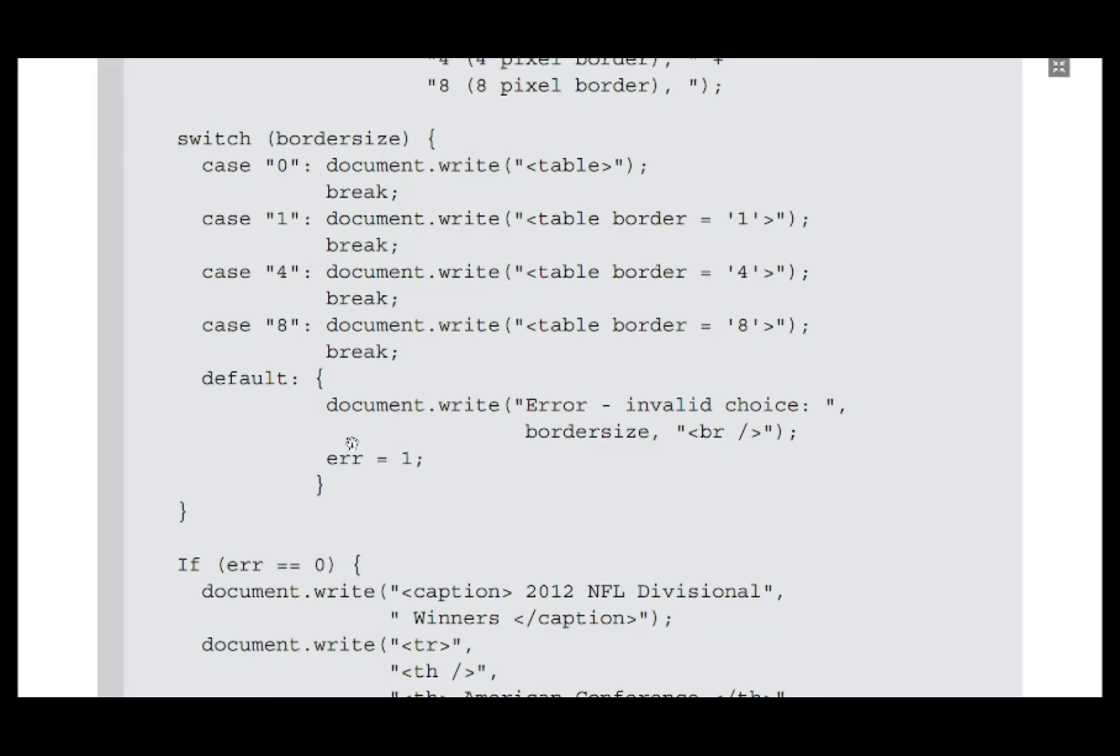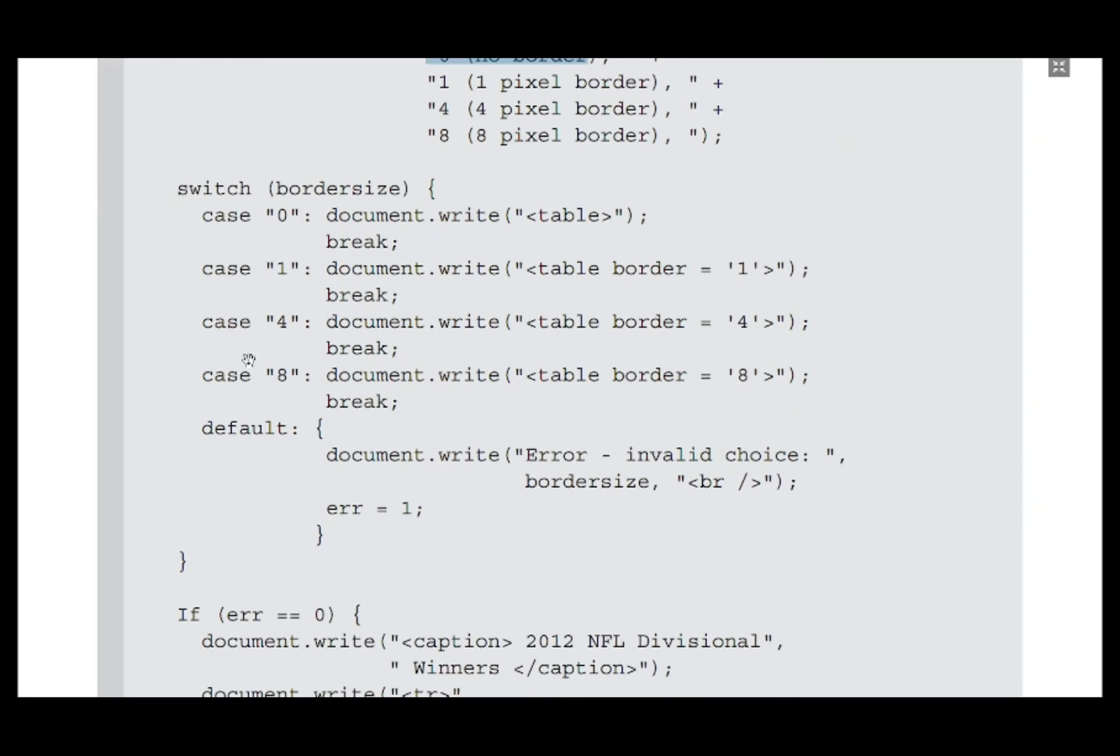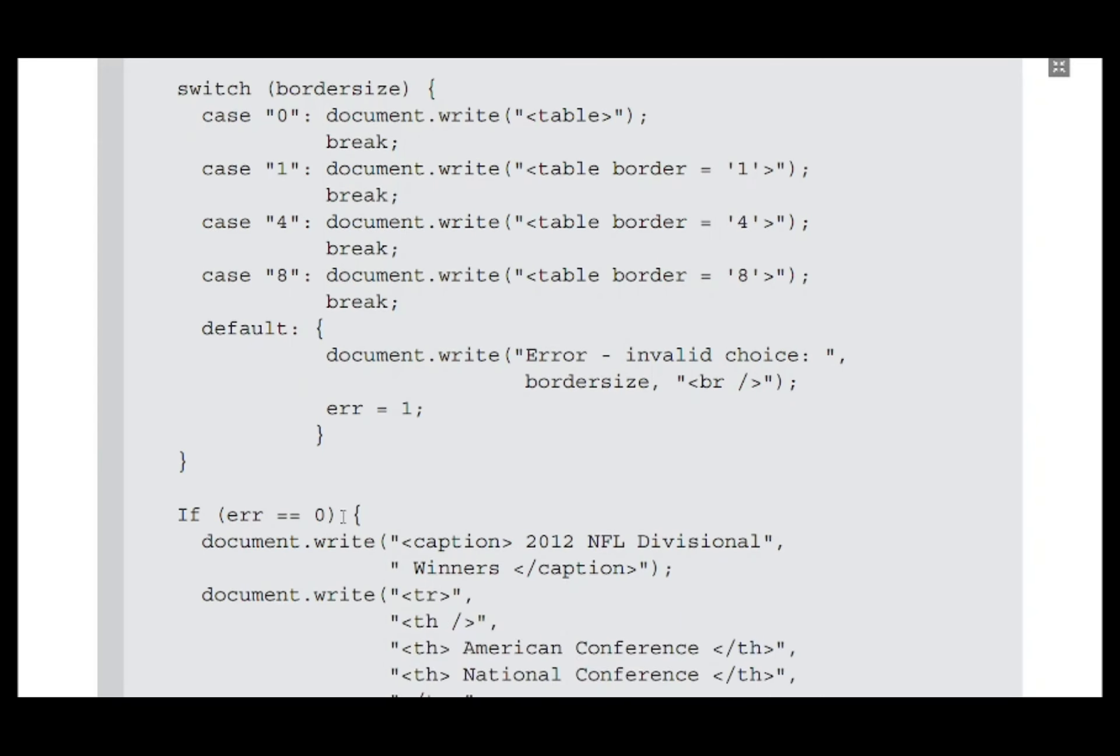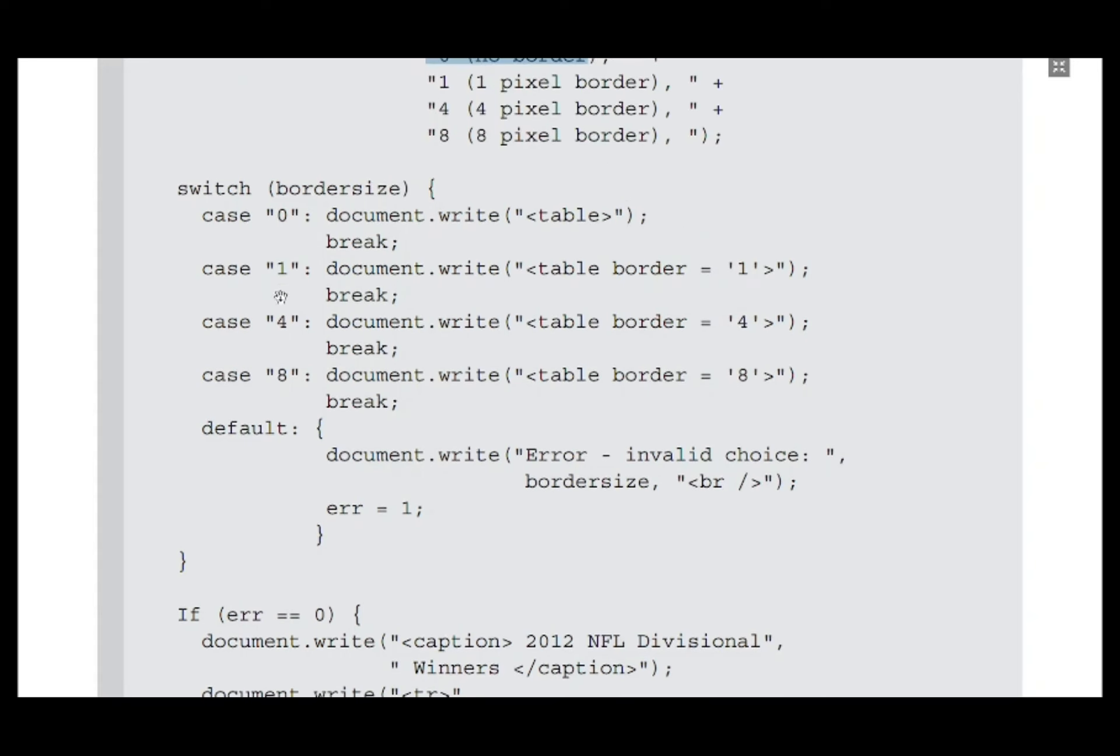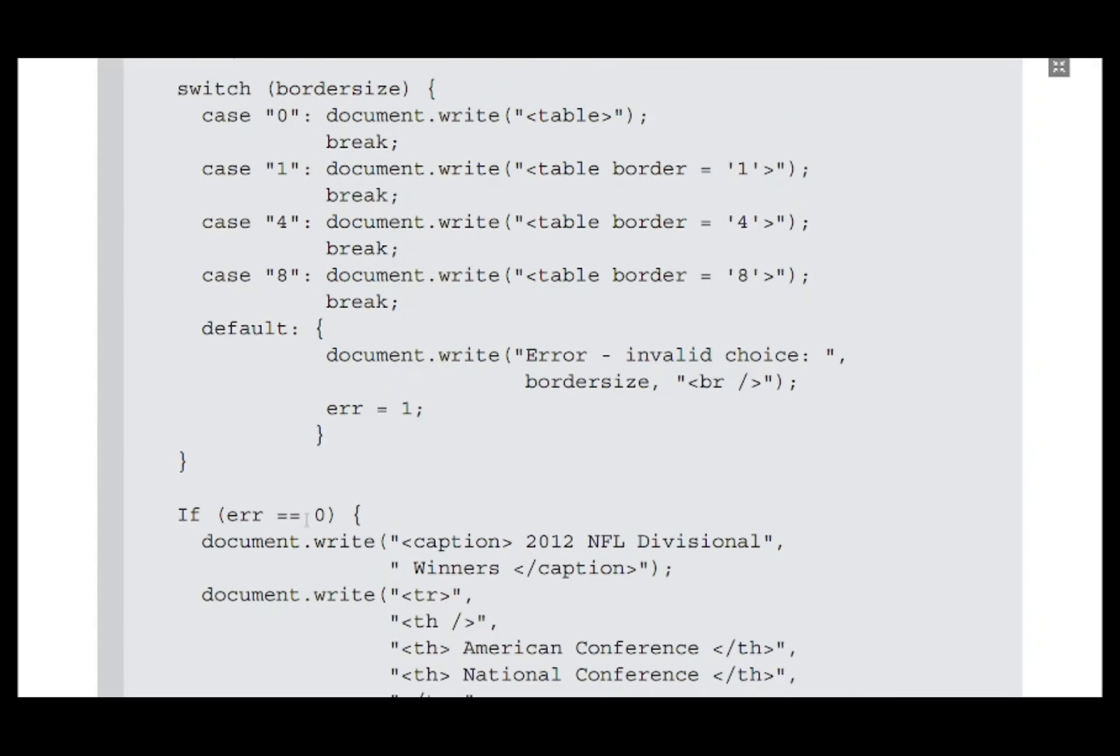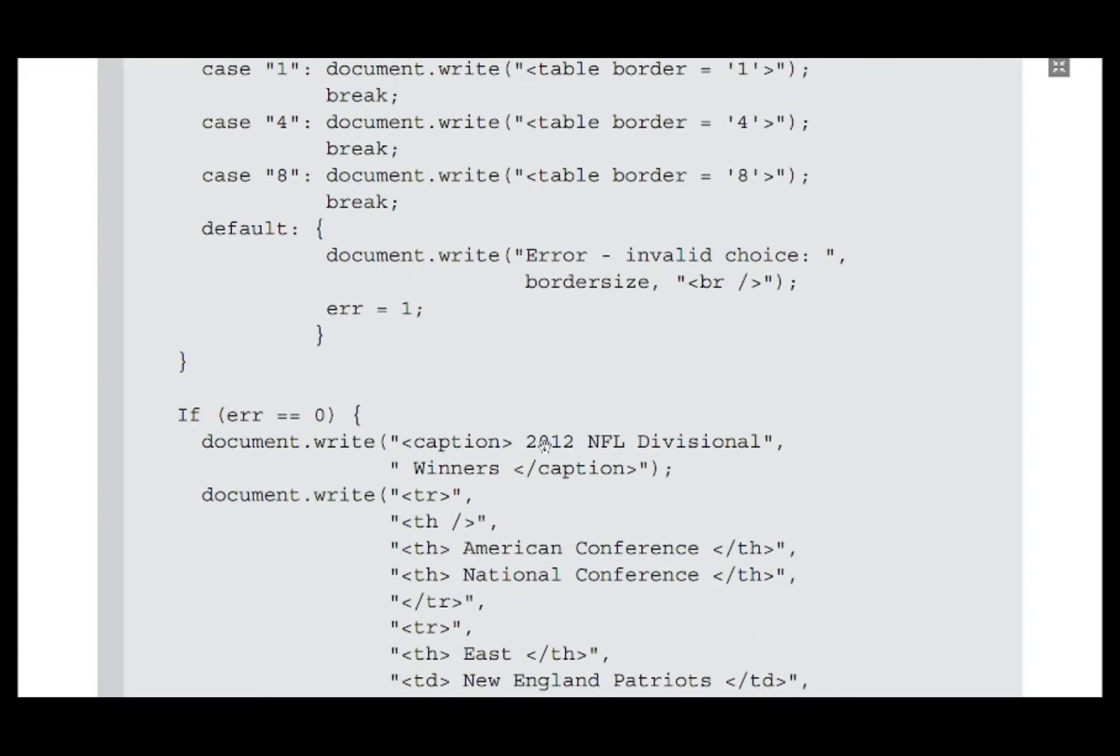After the switch statement, the err variable is checked. Under normal cases when user enters valid input of 0, 1, 4, or 8, err is supposed to be the initial value zero. Under such conditions, we should proceed with table creation, so document.write statements are written to populate the table with rows and contents.